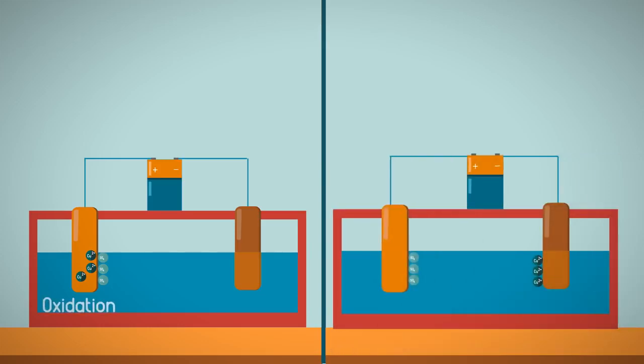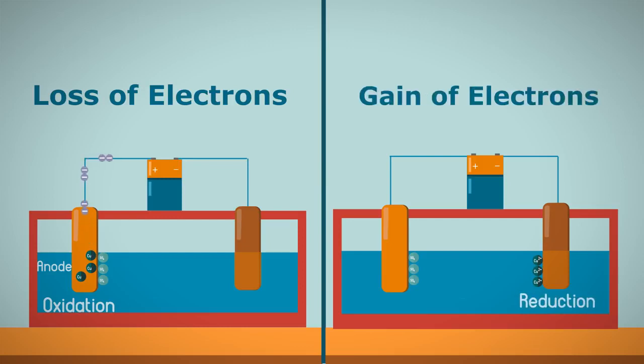So just remember that oxidation, the loss of electrons, takes place at the anode and reduction, the gain of electrons, takes place at the cathode.